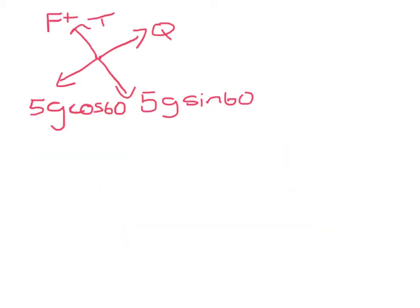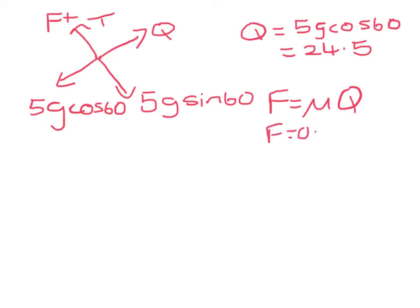I'm going to repeat this now for particle Q. The first thing I can write down is Q equals 5G cos 60. So that is 24.5. Friction equals mu Q. Mu is 0.1, so that's 0.1 times 24.5 equals 2.45.